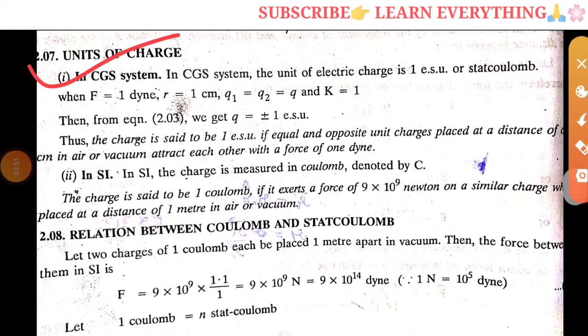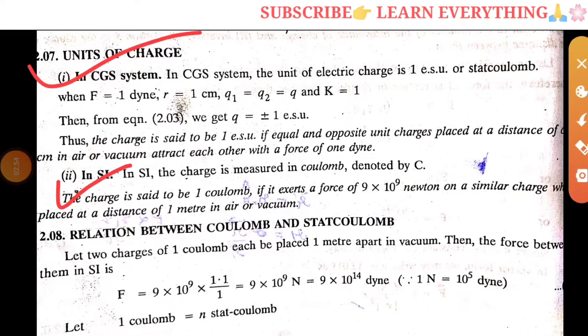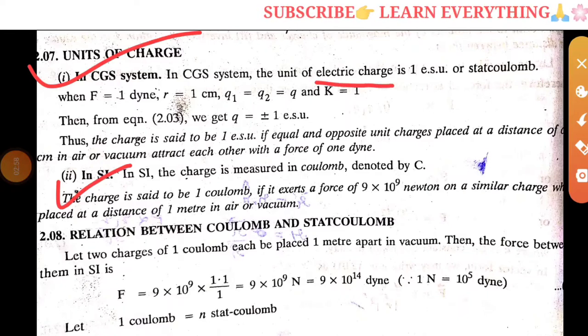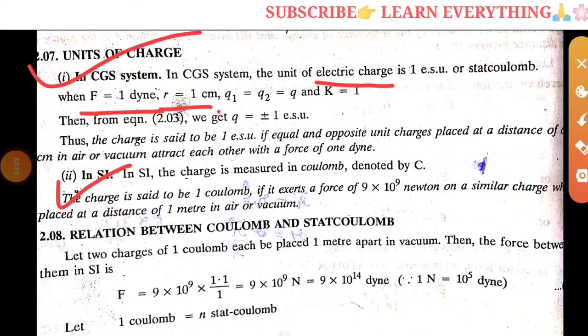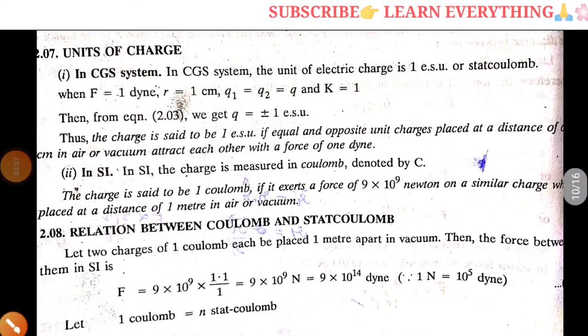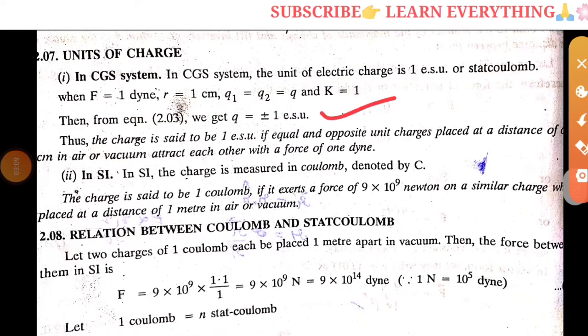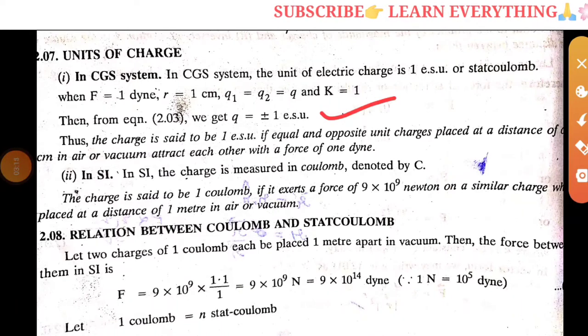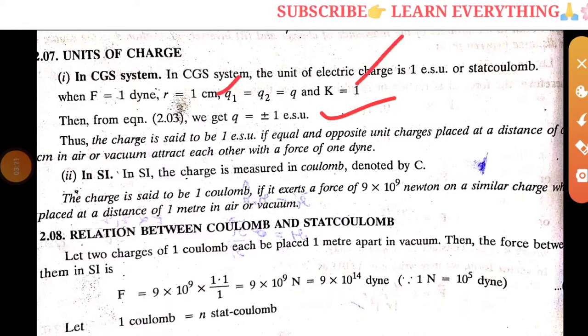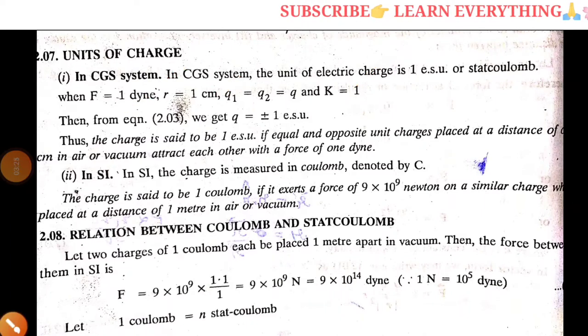Unit of charge in CGS system versus SI system. In CGS, the unit of electric charge is 1 ESU or stat coulomb. When force is 1, radius is 1 cm, Q1 equals Q2 equals Q, and K equals 1, then Q equals 1 ESU. One ESU placed at a distance of 1 centimeter in vacuum will attract or repel with force of 1 dyne.